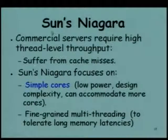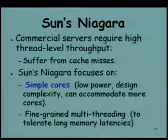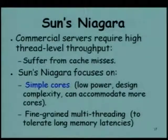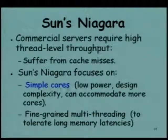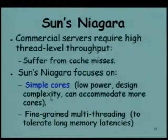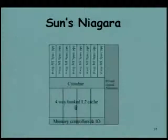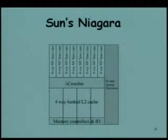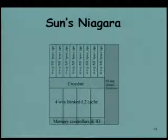Sun's Niagara is another example. Niagara is basically meant for server applications where a large number of threads are run. When you run a large number of threads, the cache would be insufficient and there will be many misses. As in other multicore processors, it uses simple cores with low power per core, simpler design, lower design complexity, and can accommodate more cores. It supports fine-grained multithreading.